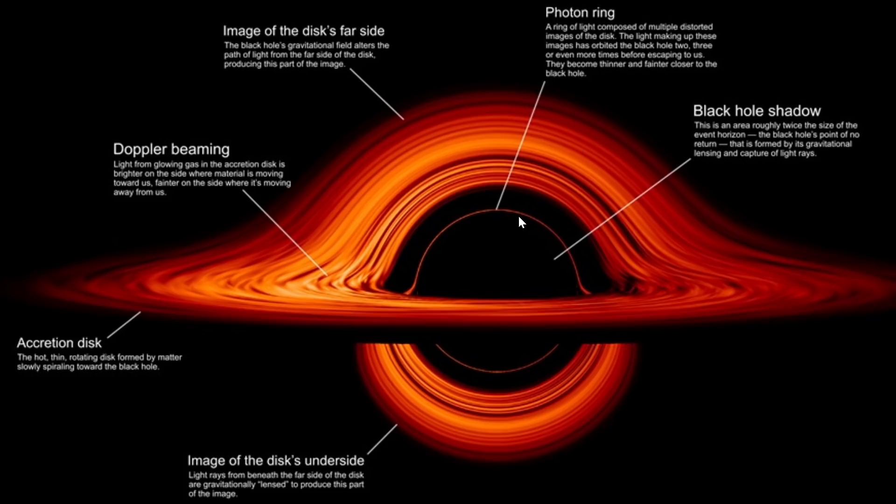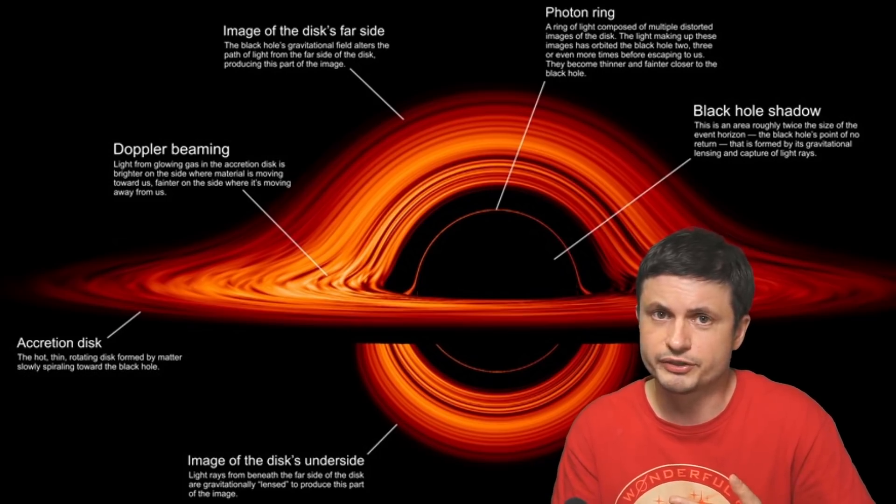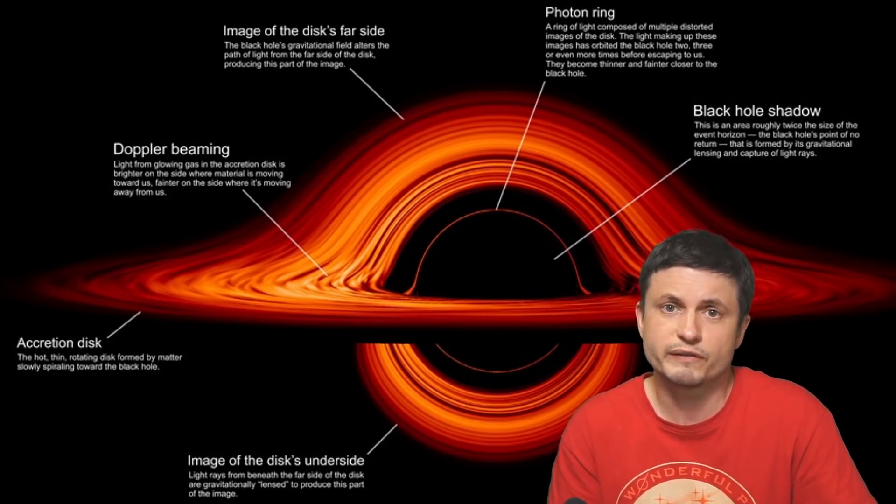So basically, the photon ring right here is the next holy grail of the scientific discovery. Because not only does it show us the universe, the entire universe, from a different perspective and a different frame of reference, but it also provides a lot of information about the black hole and the gravity around the black hole. All of this is of course extremely important for us in order to learn more about the universe itself.